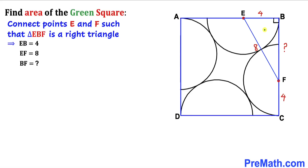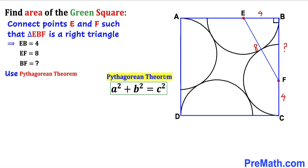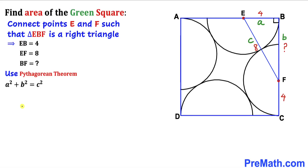Since we are dealing with this right triangle, we are going to use the Pythagorean theorem: a² + b² = c². Let me call this side length a, this unknown side length b, and this longest leg side c. In our case a is four, so that's 4² + b² = 8². Simplifying gives us 16 + b² = 64. Subtracting 16 from both sides, b² turns out to be 48.